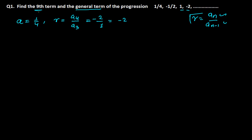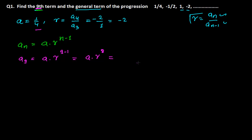We need to find the ninth term. The general term of a geometric sequence is a·r^(n-1). For the ninth term, it becomes a₉ = first term × r^(9-1) = first term × r^8. Our first term is 1/4, so we write (1/4) × (-2)^8.